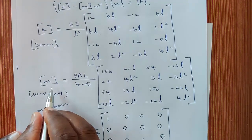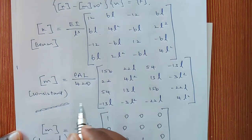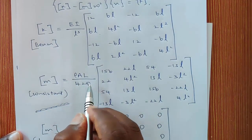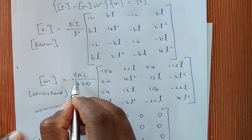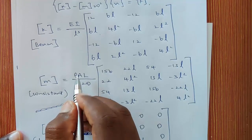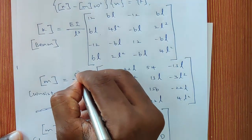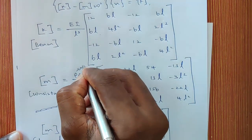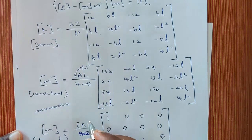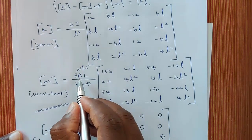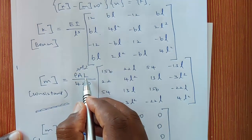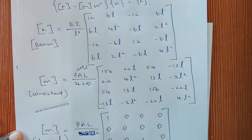The equation for the consistent mass matrix is ρAL/420 times the matrix. Here ρ is the weight density — weight density means the unit will be Newton per meter cubed or Newton per mm cubed — A is the area, and L is the length of the element.